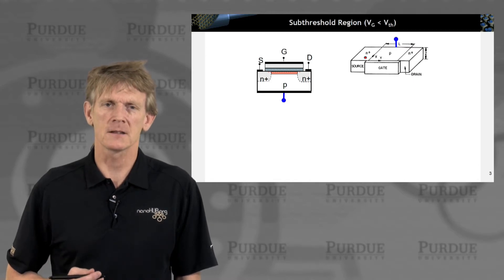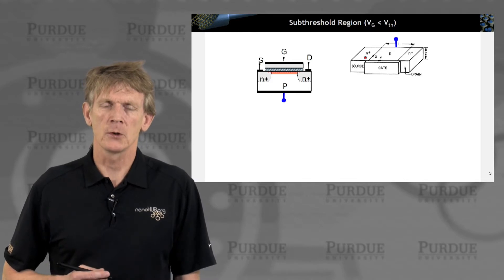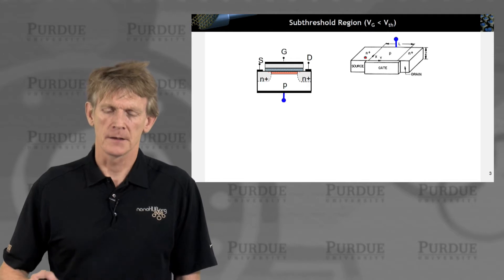It's biased such that the acceptors are being exposed, and we have a depletion region, and we will have a few minority carriers available in the system.